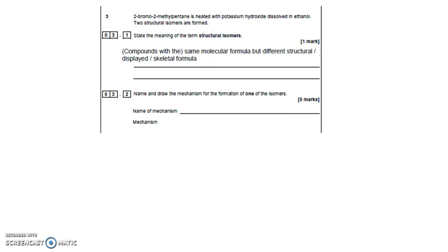Or you could change the functional group entirely — a functional group isomer. For example, you could change a ketone into an aldehyde, where you've got a C double bond O, moving it from the middle of a chain to the end. Another example: if you had C4H8, you could introduce a double bond to give but-2-ene, but if you draw it as a cyclic compound it becomes cyclobutane — ene to ane — and that's a functional group change; a functional group isomer.